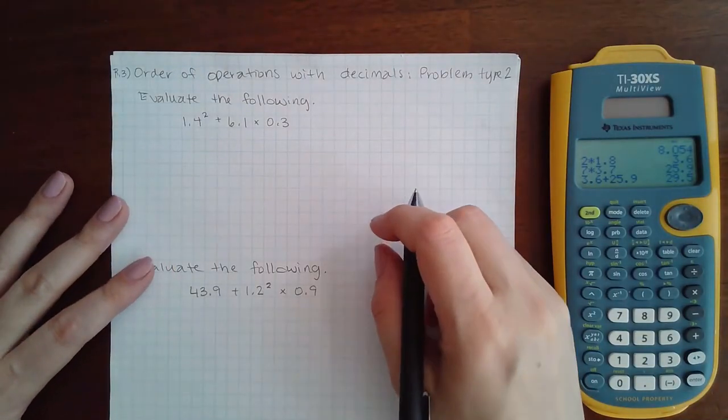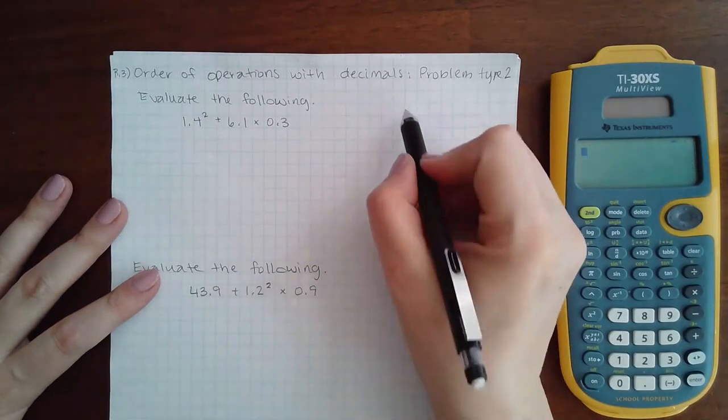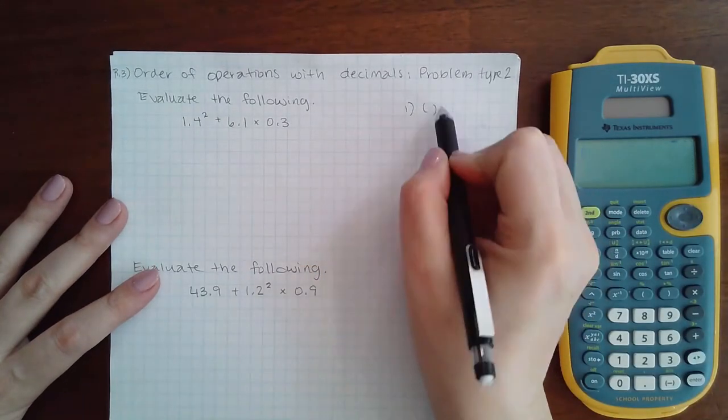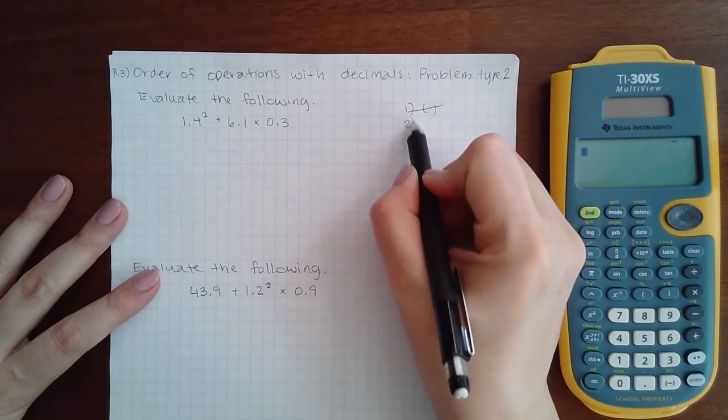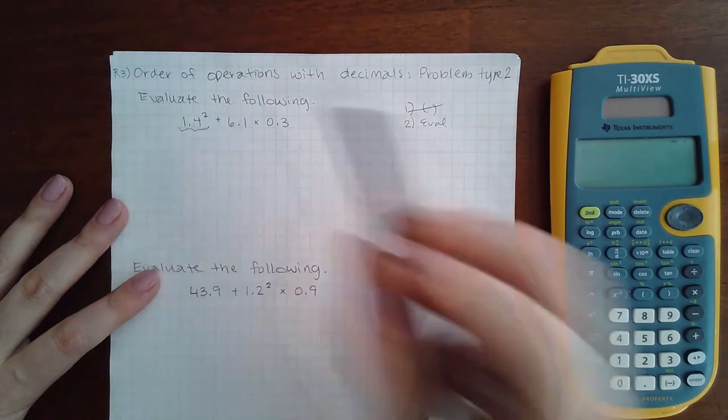This is order of operations with decimals, problem type two. We're going to follow the order: one is grouping mechanisms, I don't have any grouping symbols; two is to evaluate, and I do have an exponent that I need to evaluate here.